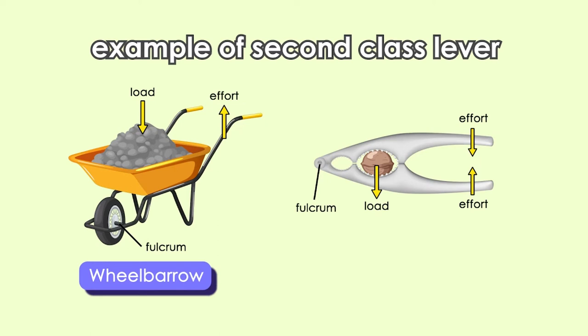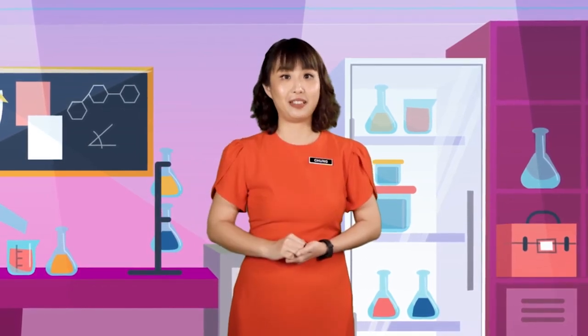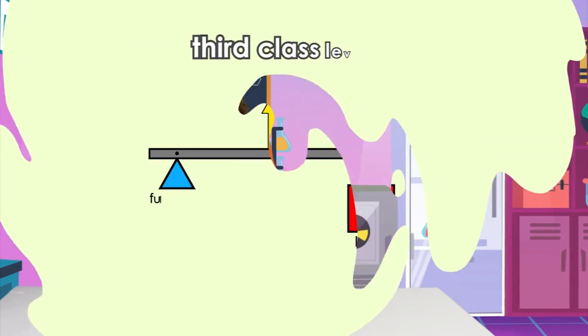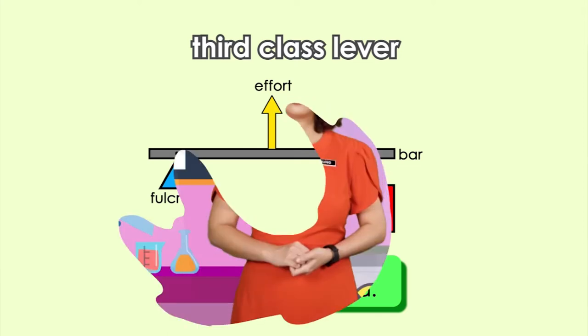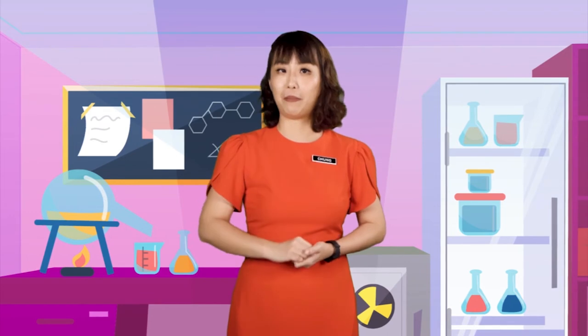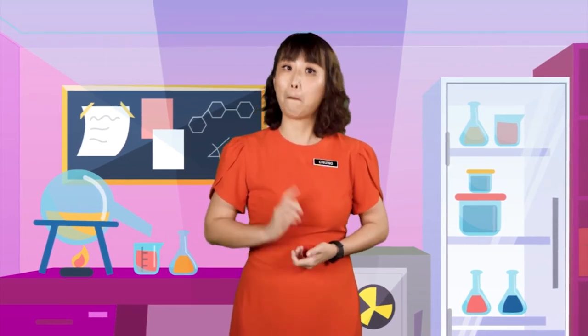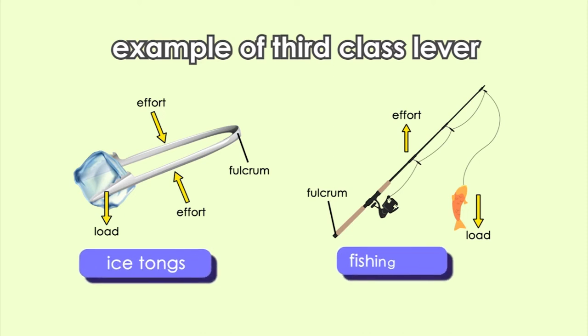These are examples of the second-class lever: the wheelbarrow and the nut cracker. This is the last type of lever — the third-class lever. In a third-class lever, the effort is in between the fulcrum and the load. For classification of the lever, just remember the part that is in the middle. These are some examples of third-class levers: the ice thongs and the fishing rod.